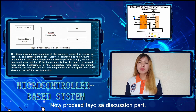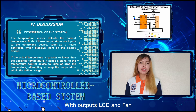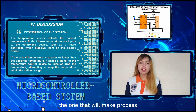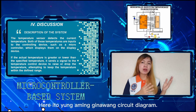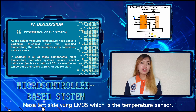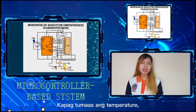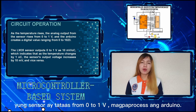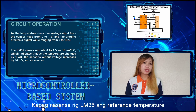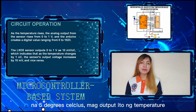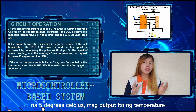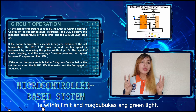Proceeding to the discussion part — with outputs LCD and fan, and the processing unit being the Arduino microcontroller. Here is our circuit diagram. On the left side is the LM35, which is the temperature sensor. When the temperature rises, the sensor voltage increases from 0 to 1 volt. The Arduino processes the signal, and when the LM35 senses the reference temperature of 25 degrees Celsius, it outputs that the temperature is within limit and the green light turns on.